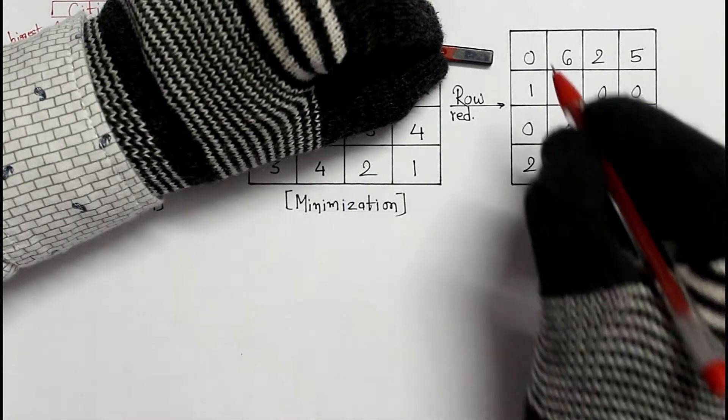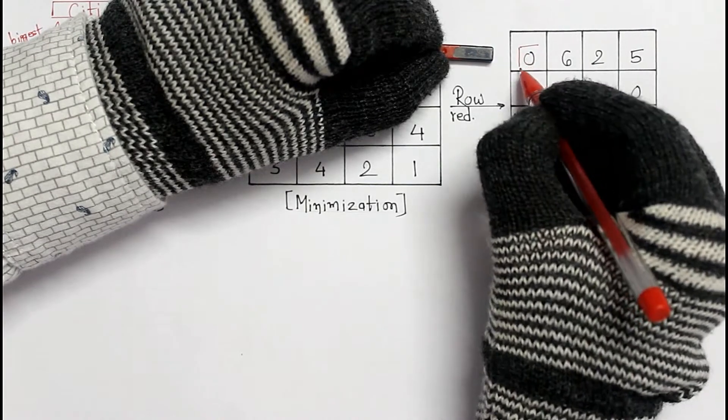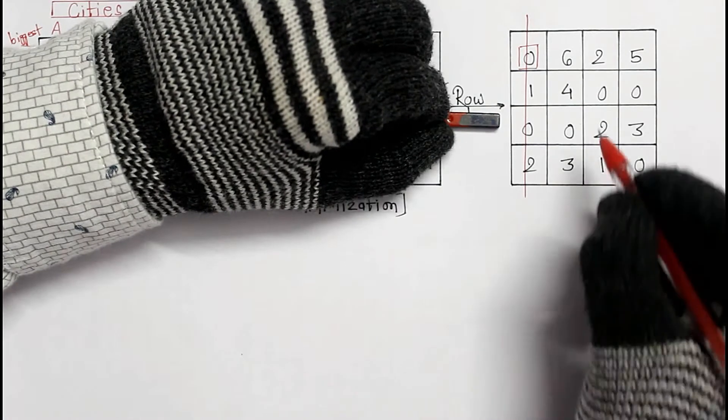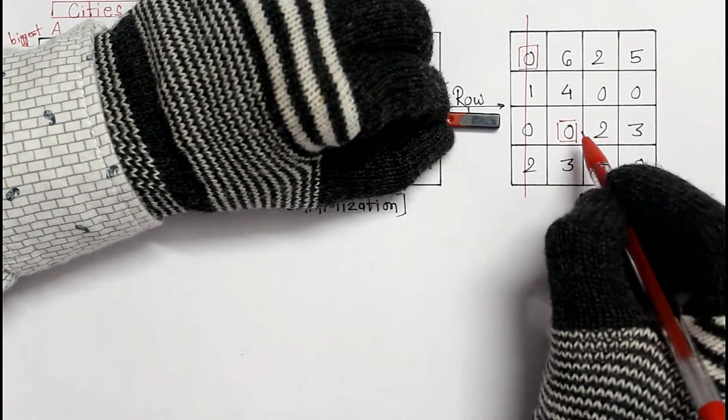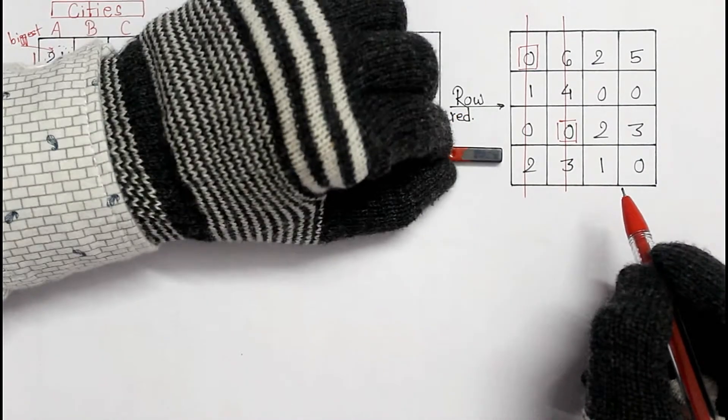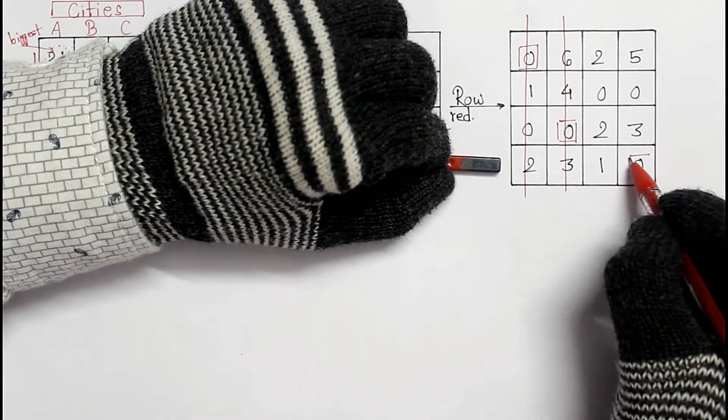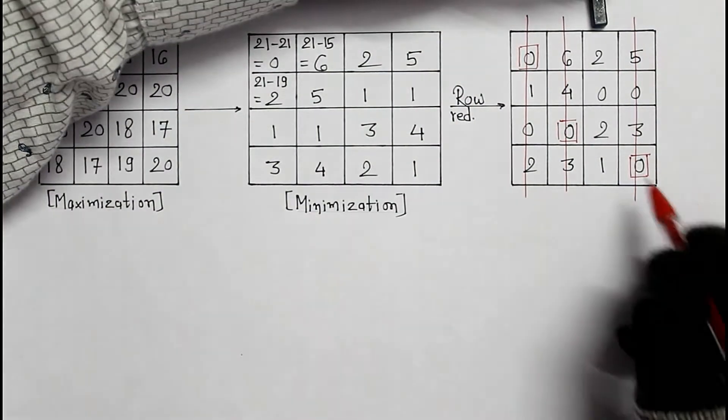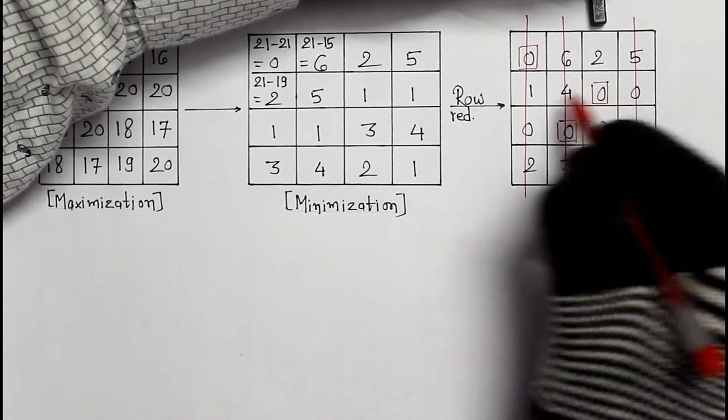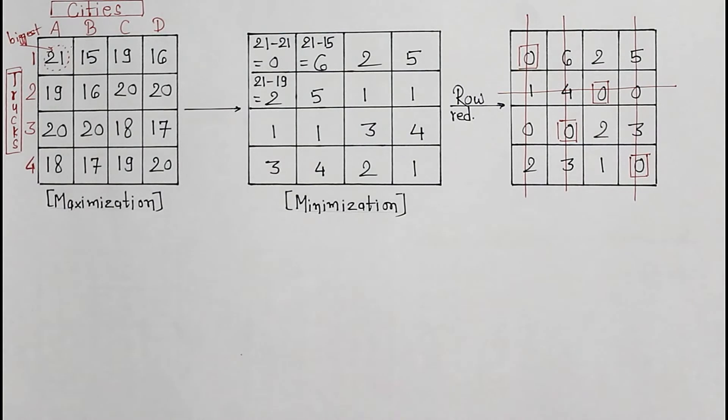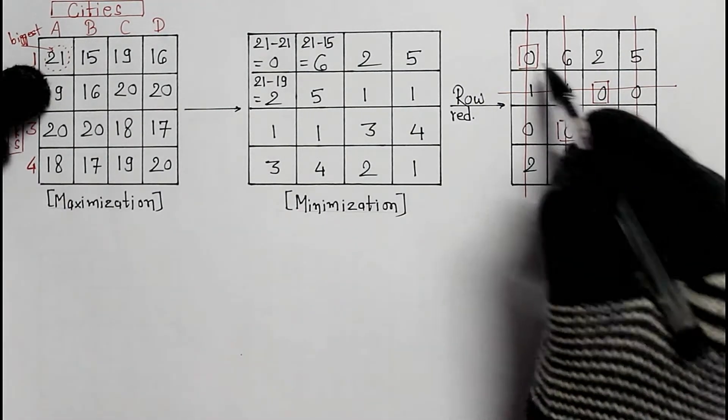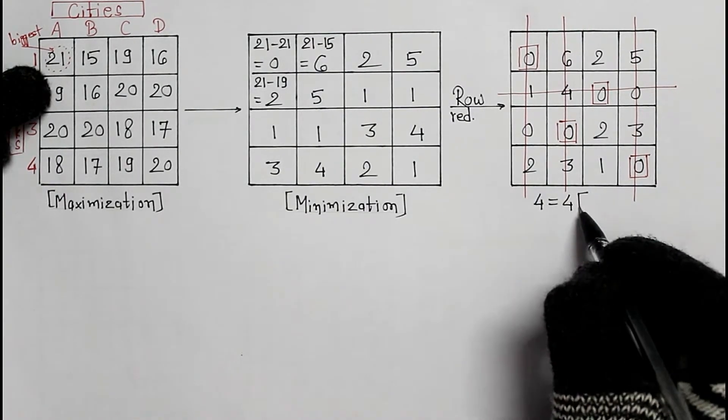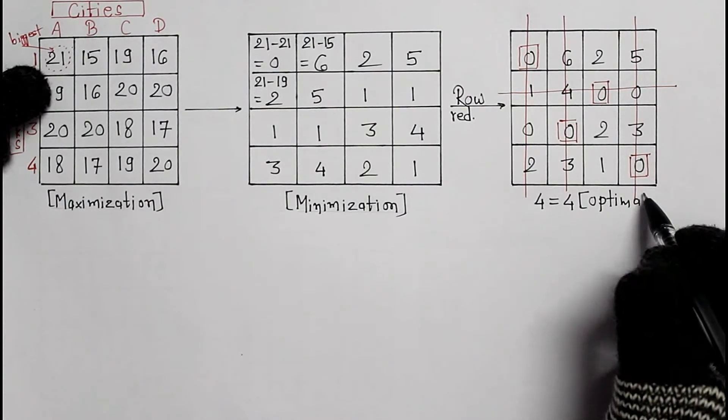Examination process. Make an assignment. Cross the column here. Now the columns, the only column, third one. Cross the row. Total assignment, we have total 4 assignments. 4 equals 4. This is an optimal assignment.